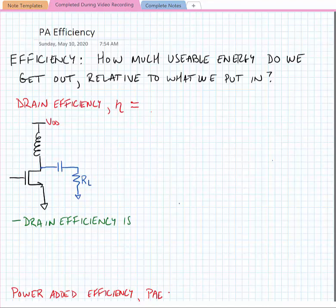Okay, so one of the most important parameters for a power amplifier outside of its output power is its efficiency. Efficiency tells us how much usable energy do we get out of the power amplifier relative to what we put into it.